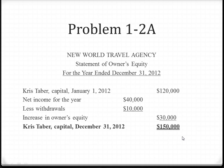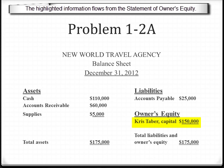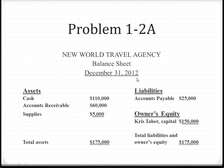The next statement we're going to create is the balance sheet. The balance sheet is just like the accounting equation. We list the name of the company, the name of the statement, and the balance sheet is for December 31, 2012 only. We list assets, liabilities, and owner's equity. We list all of the assets: cash $110,000, accounts receivable $60,000, supplies $5,000, for total assets of $175,000. For liabilities, we had $25,000 in accounts payable. The Chris Tabor Capital of $150,000 came from the statement of owner's equity, and we add these two totals together to determine total liabilities and owner's equity of $175,000. Assets equal liabilities plus owner's equity — $175,000 equals $175,000. Our balance sheet is in balance.